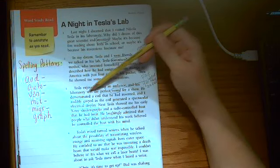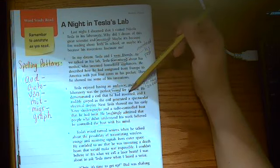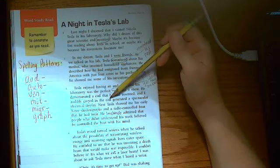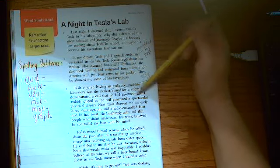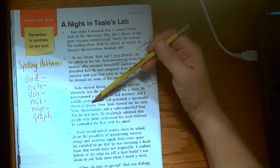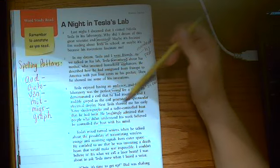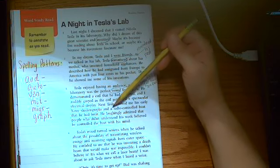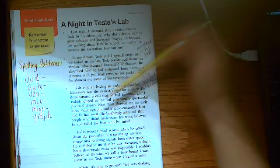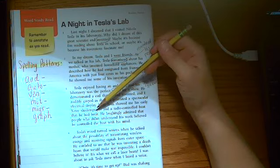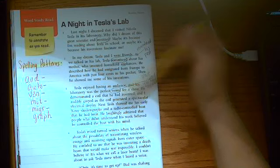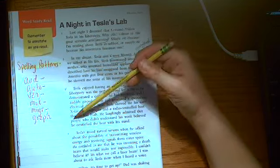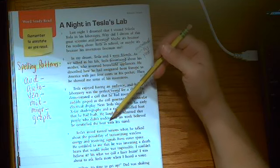He demonstrated a coil that he had invented, and I audibly gasped as the coil generated a spectacular electrical display. Next, Tesla showed me his early x-ray shadow graphs and a radio-controlled boat that he had built. He laughingly admitted that people who didn't understand his work believed he controlled the boat with his mind.